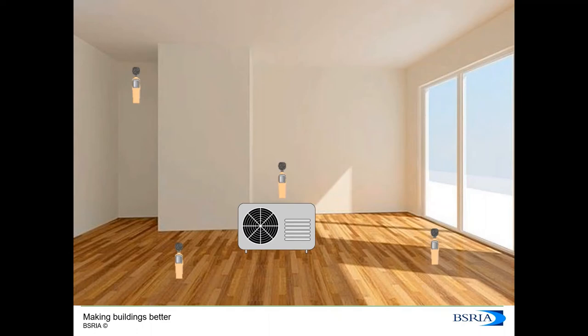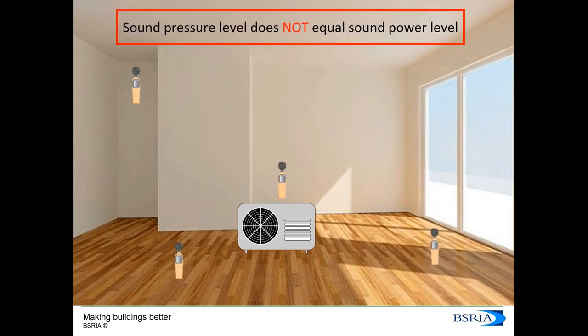Both sound power levels and sound pressure levels are presented using the decibel unit, which can cause confusion. It's important to remember that sound pressure levels do not equal sound power levels — they are two different parameters. Sound power levels are independent of the acoustic environment and therefore useful for comparing two products, while sound pressure levels are dependent on the specific acoustic environment and useful for determining compliance on site or dealing with noise complaints post-installation.